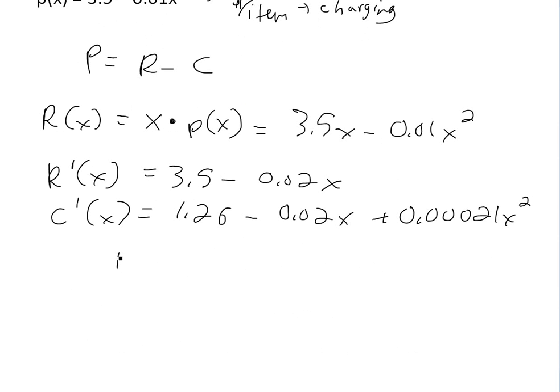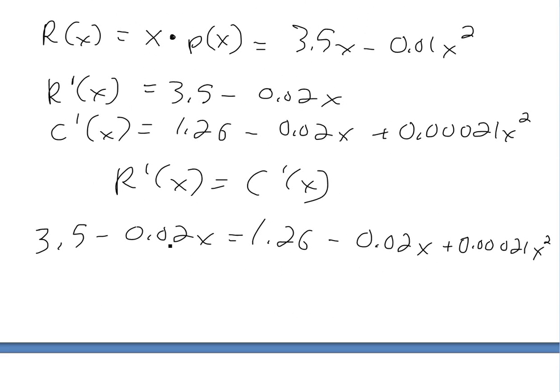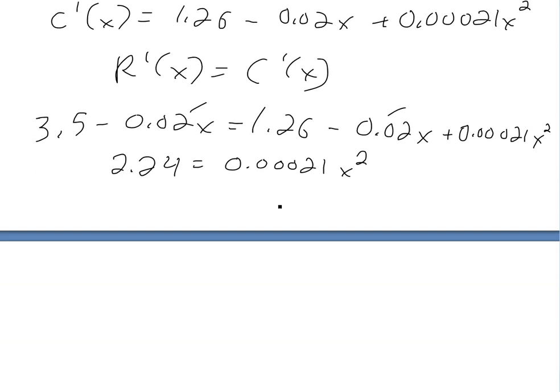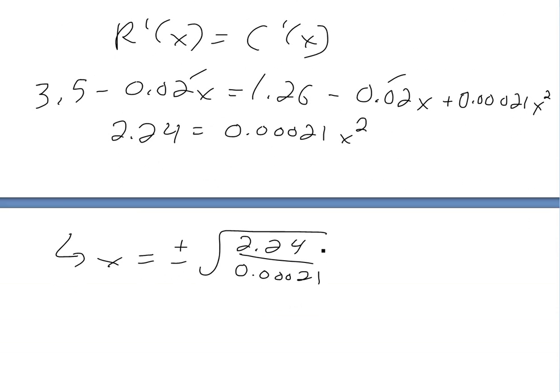Now we just set these equal to each other. This is the case when the profit is max. We have this over here and we just cancel like terms. This cancels and this cancels and then shift this over to this side. We're going to get 2.24 equals this one. Then just solving for X, we're going to get X equals plus or minus square root 2.24 divided by this. But in real life, we can't have negative production here, so we only look at the positive.